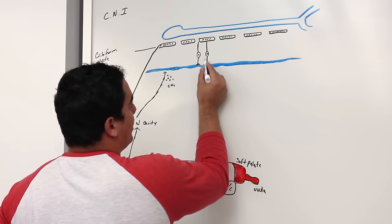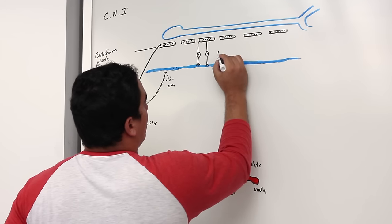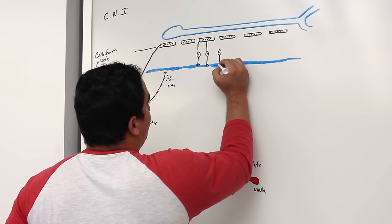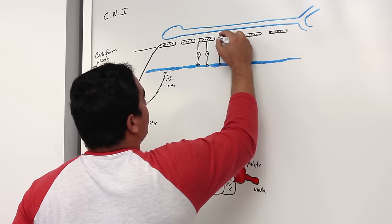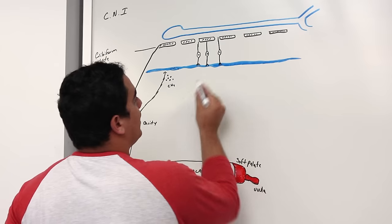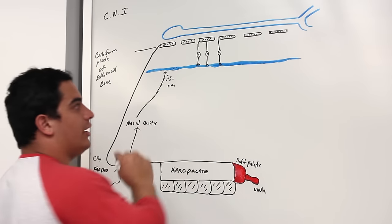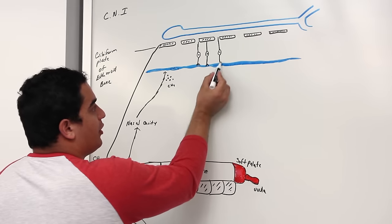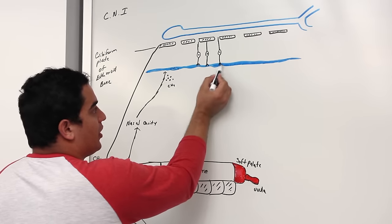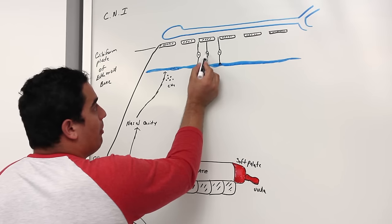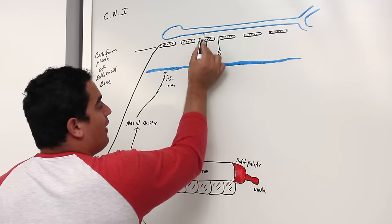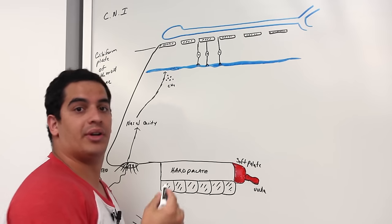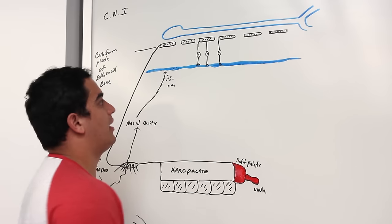So they have a dendrite extension and an axon extension. These bipolar neurons are specifically the olfactory neurons. This is the actual olfactory receptor here with the terminals, this is the olfactory cell body, and these are the olfactory axons that will come together to form the olfactory nerve.